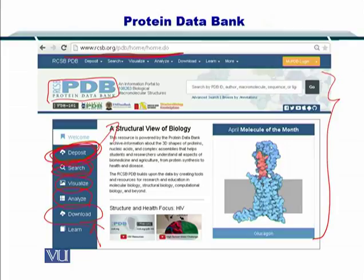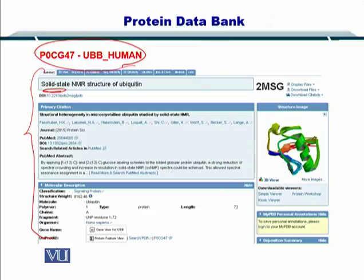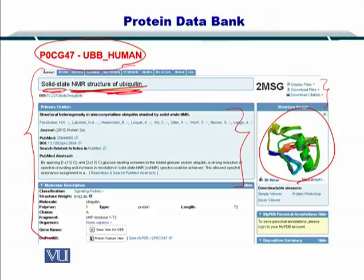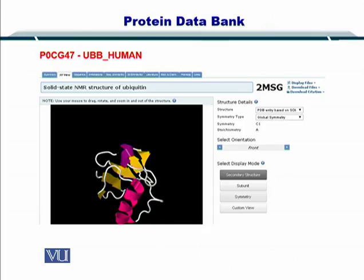Now I will give you an example of a protein I searched using PDB. I simply input 'human ubiquitin' and got this ID. This is where I was taken to. As you can see, it's a solid state NMR structure of ubiquitin. This ubiquitin structure has been obtained using NMR, which is a very high resolution technique for studying the structure of proteins. The publication in which this structure was reported is also shown here, along with the display files and download files.